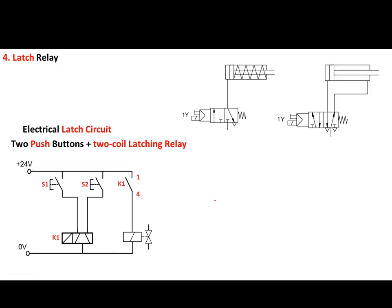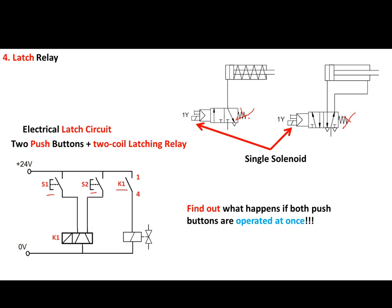The circuit of a latching relay uses two push buttons and the latching relay itself, where the contact of the relay is connected to the output — which could be a lamp, buzzer, or another relay. We are again using a single solenoid DCV, not a double solenoid. A question to consider: what happens if both push buttons are operated at once — which coil will be energized? That is left for you to find out.